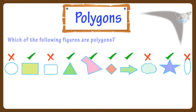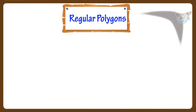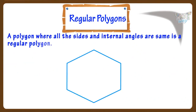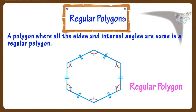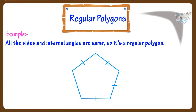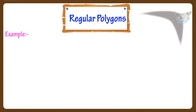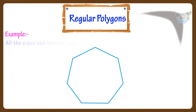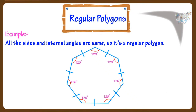Now let's learn what are regular polygons. A polygon where all the sides and internal angles are the same is a regular polygon. For example, this is a polygon where all the sides are the same. All the internal angles are also the same, so it's a regular polygon. Here is another example.